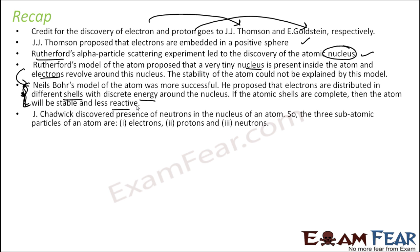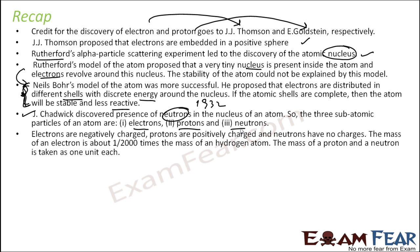Then Chadwick discovered the neutron pretty late in the game — 1932 — and thus we have three subatomic particles of the atom: electron, protons, and neutrons. These electrons are negatively charged, protons are positively charged, and neutrons have no charge.